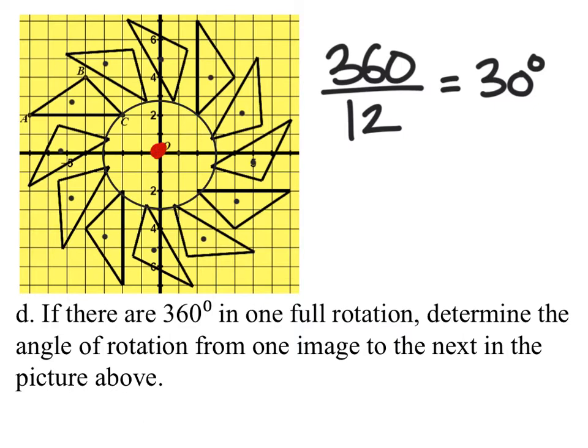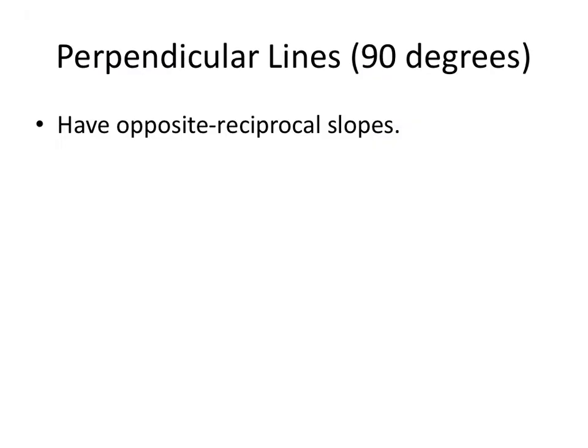We will be rotating these a specific number of degrees. In ninth grade you'll rotate these various amounts, but today we're focusing specifically on 90 and 180 degree rotations — you could say 270 if you wanted. Now, perpendicular lines: this is very important as we start rotating 90 degrees clockwise or counterclockwise.